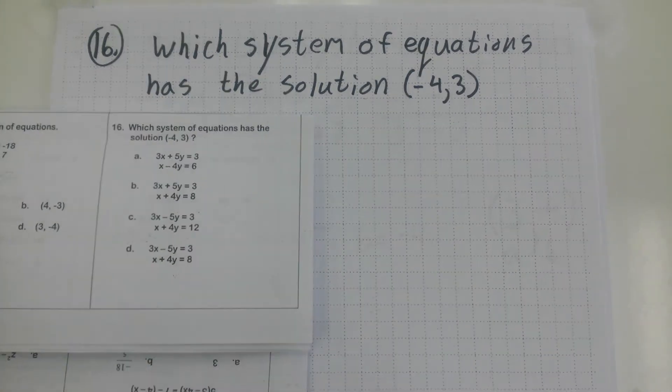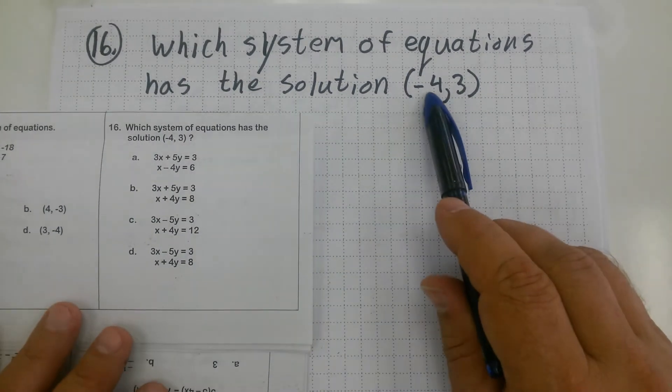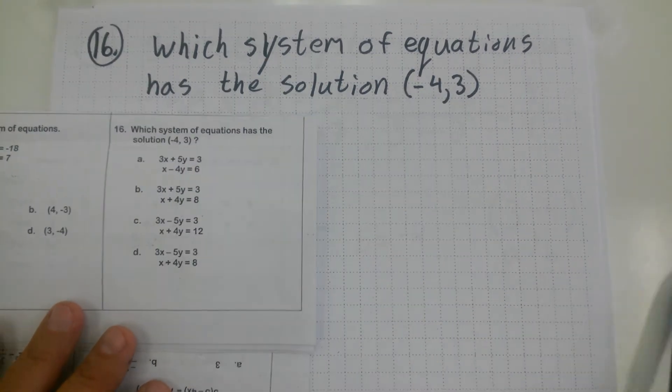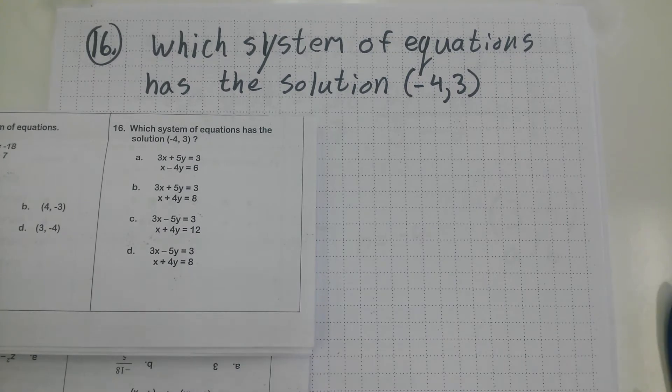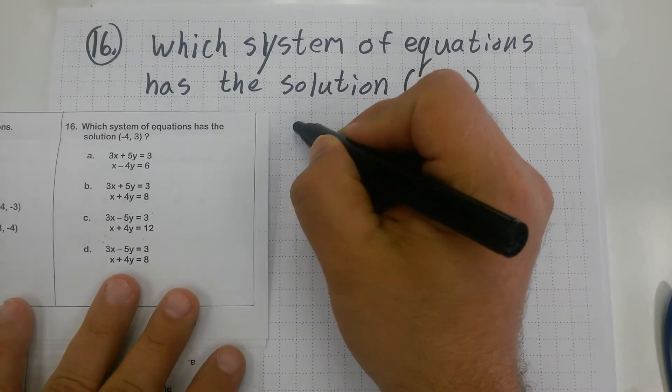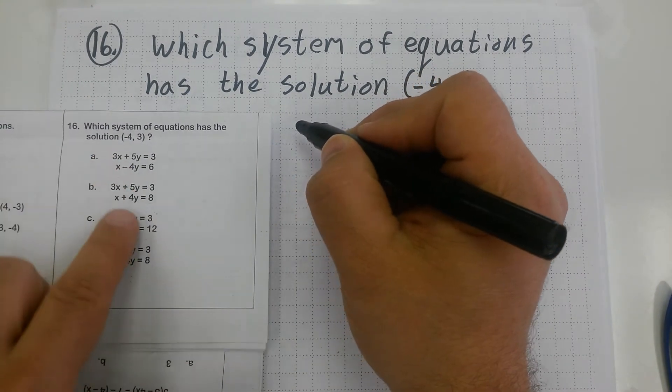One of the methods of doing this would be to take this negative 4 or 3 and plug it in to the values to see if it works. I like that method, but I'm going to do a different method, and I'm going to use Kramer's rule to quickly generate the x value for each of these choices.